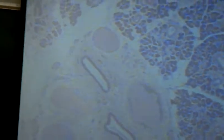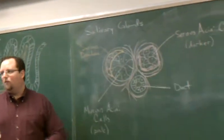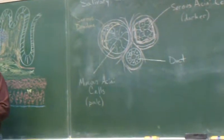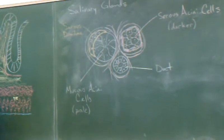There are no mucous cells. If there are no mucous cells, you cannot have a crescent-shaped cap of serous cells. Therefore, there are no serous demilunes in the parotid gland, only serous acini.